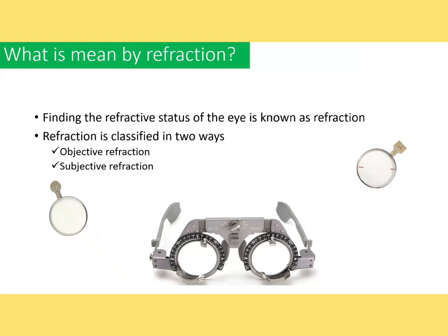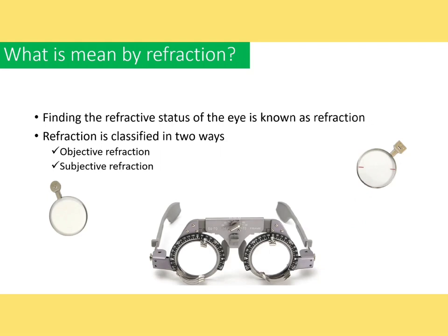In objective refraction, we find out the refractive status of the eye by using some instrument without any input from the patient. In subjective refraction, we find out the refractive status with the help of patient response. Normally subjective refraction is done after objective refraction, but it can be done without it. In cases of corneal scar or lenticular changes, objective refraction can't be performed, so you need to depend completely on subjective refraction.